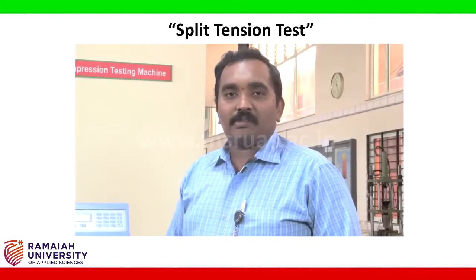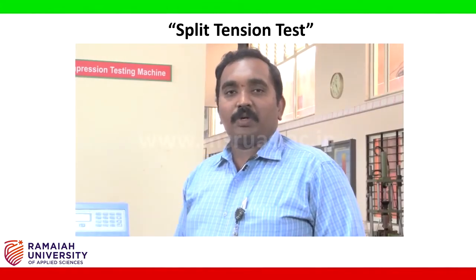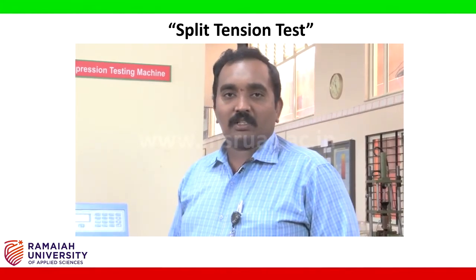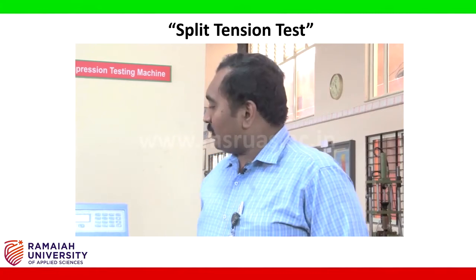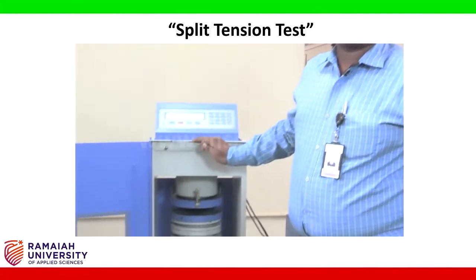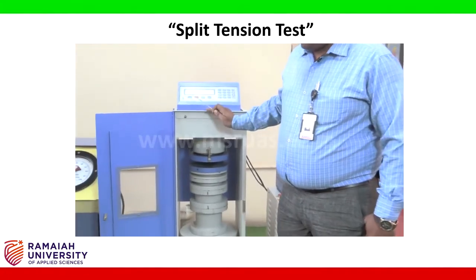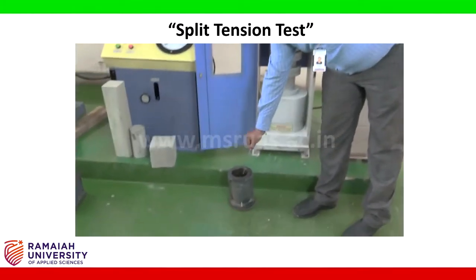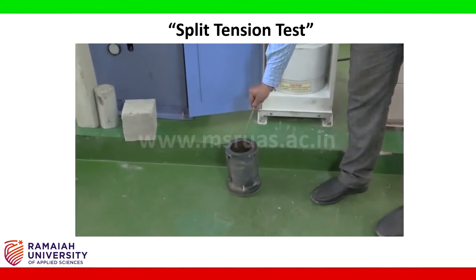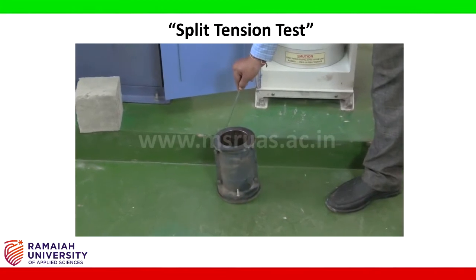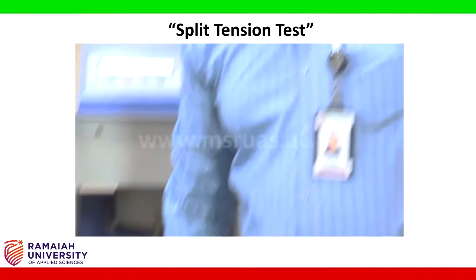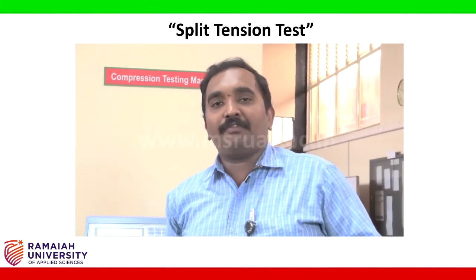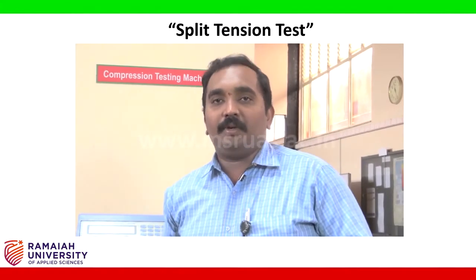Hi students, the third test we are going to do is the split tensile strength test. The apparatus required includes the compression testing machine along with the split gauge. The cylindrical mold has a diameter of 10 cm and height of 20 cm. There is also a standard mold available with a diameter of 15 cm and height of 30 cm.